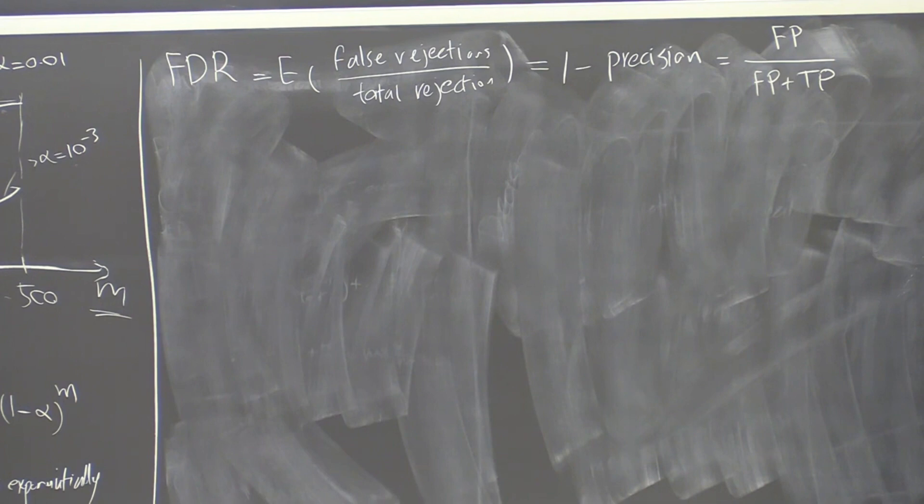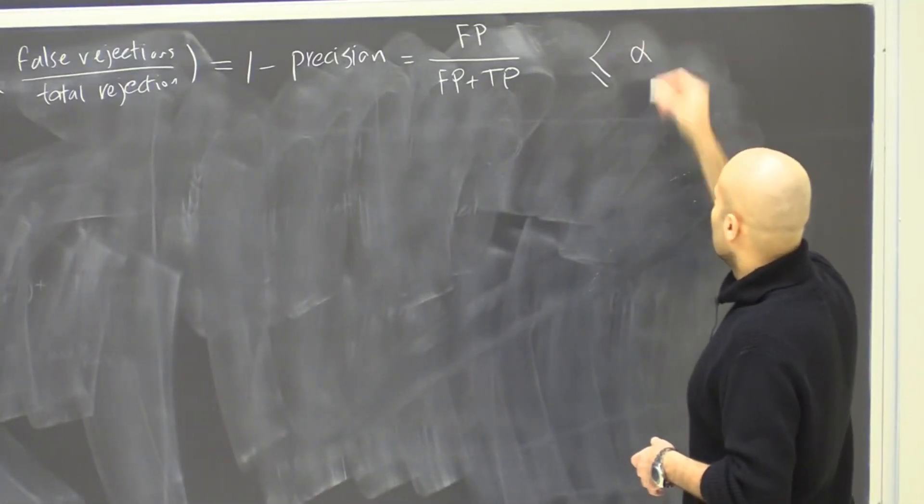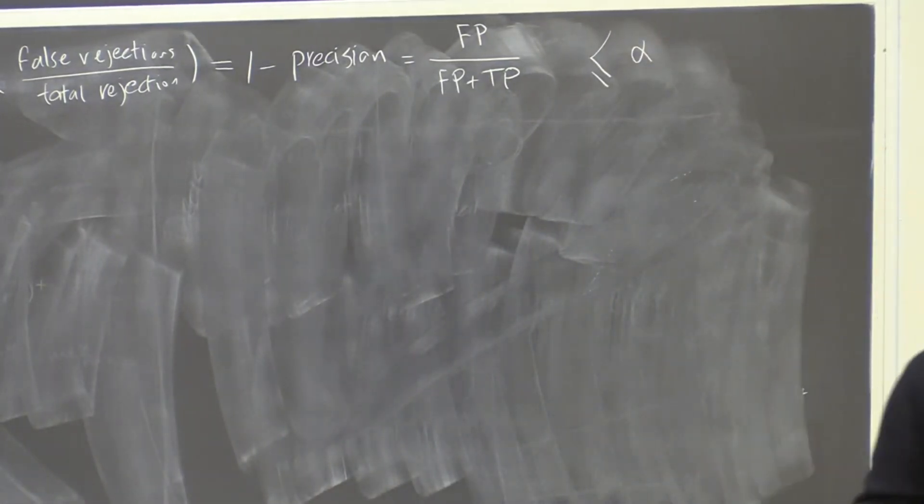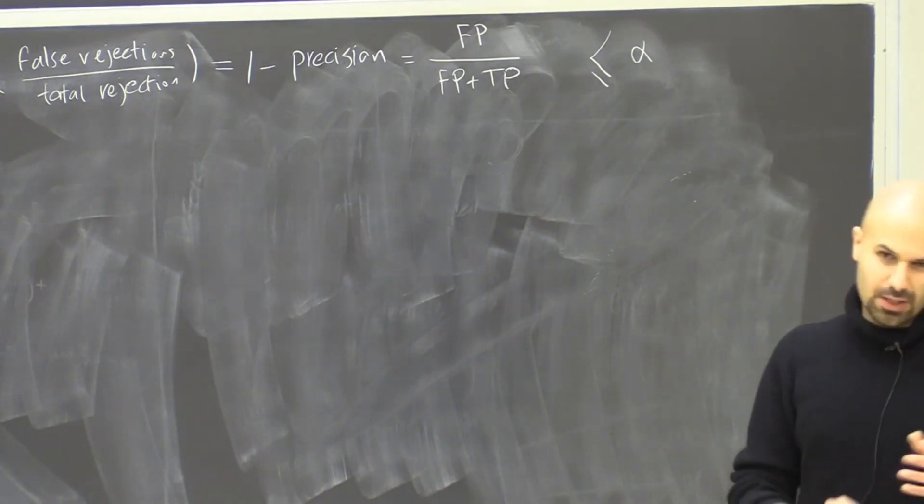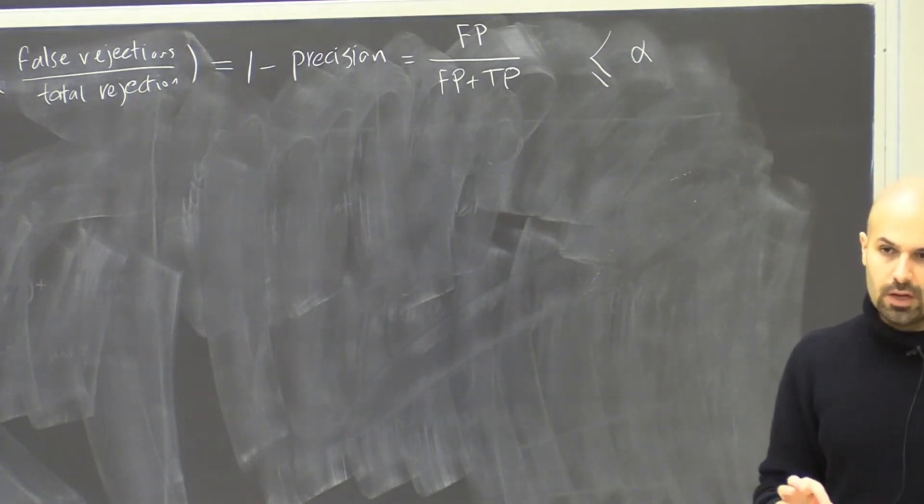We want to control this false discovery rate by some threshold. So in your textbook it uses Q, but to make it easier, I'm going to continue using alpha. But usually the alpha that we have for false discovery rate is not 5%. Sometimes an alpha of 20% or 10% is also fine.